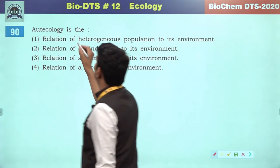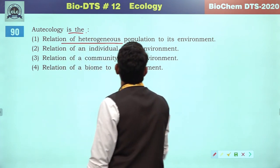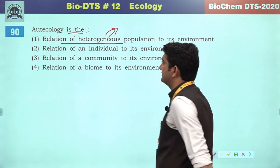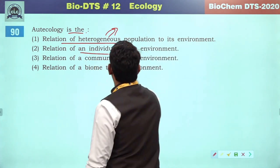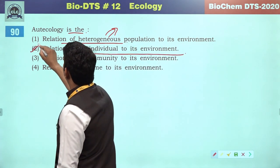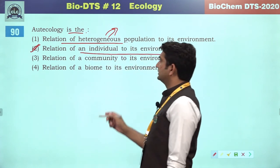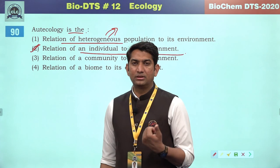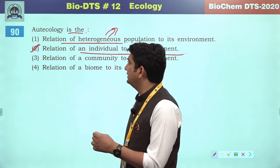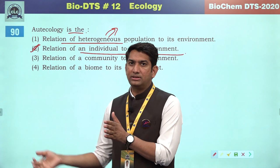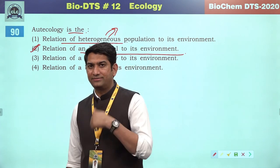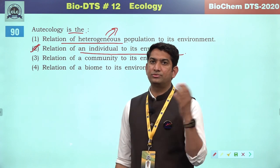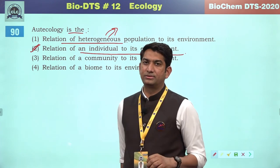Art ecology is the relation of a heterogeneous population. Heterogeneous reference with different types of individuals — the relation of an individual to its environment — definitely correct. So the correct answer is 90. Students, we are discussing the paper of ecology containing 180 questions. I have discussed the initial 90 questions and will discuss questions 91 to 180 in the next video. Thanks.